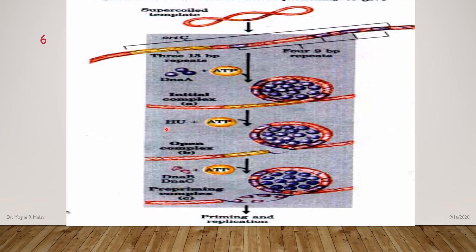Next, the histone-like protein, with the help of ATP, somehow supports the unwinding of DNA at the 13 base pair sequences. This unwinding takes place at the 13 base pair sequence, and this is known as open complex formation.